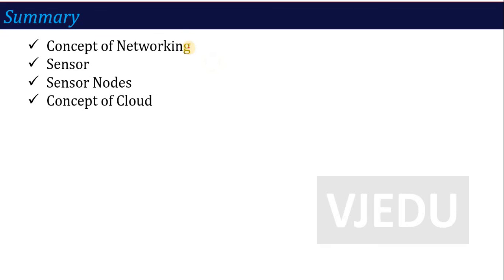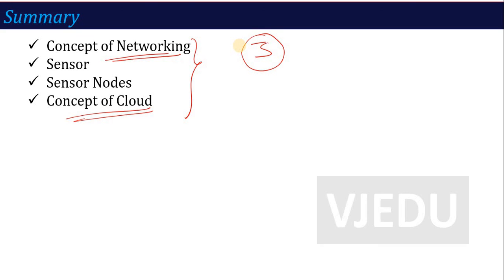I hope you now understand this topic. If you have questions in the question paper, you can now explain: what is networking, what do you mean by sensor, what are the different types of sensor, what do you mean by sensor node, and what is the concept of cloud. With this, unit number 3 — operational amplifier with IoT concepts — is complete. From the next lecture, we will start unit number 4, which covers digital electronics with the introduction of IC technology. Thank you.